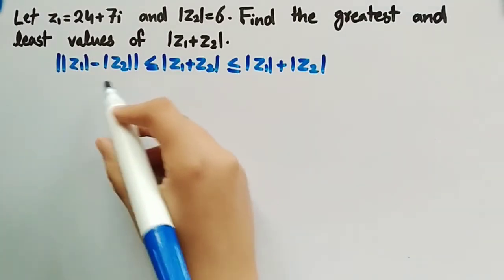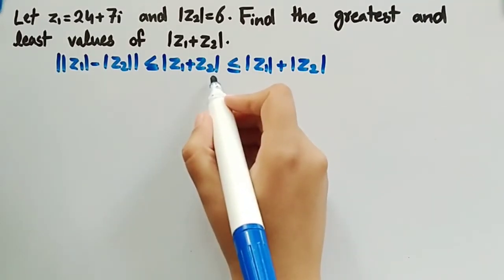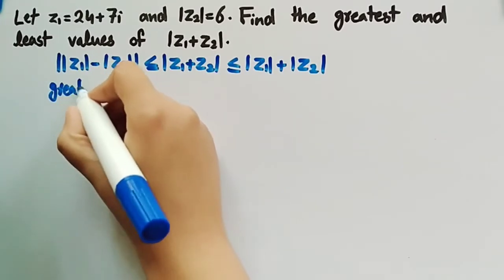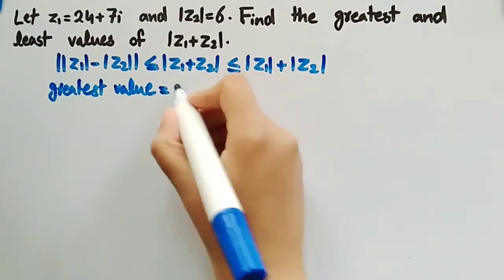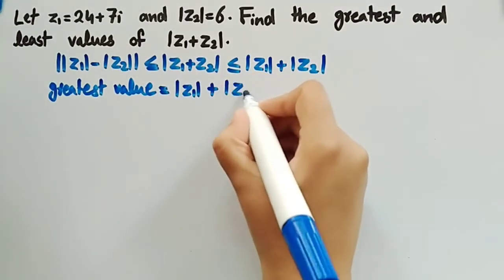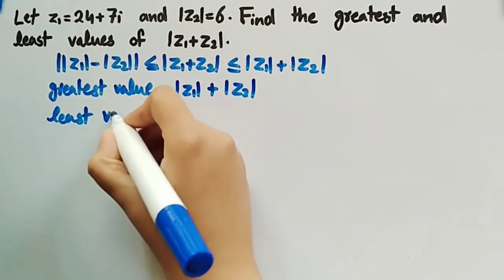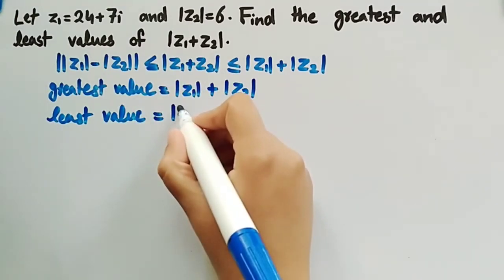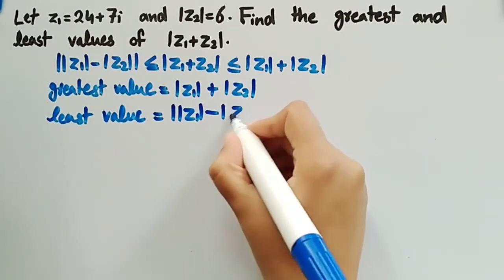From this inequality, we can see the least and the greatest values of mod of z1 plus z2. The greatest value is equal to mod of z1 plus mod of z2, and the least value is equal to mod of (mod z1 minus mod z2).